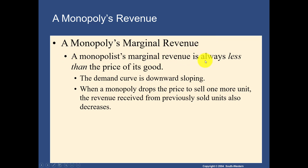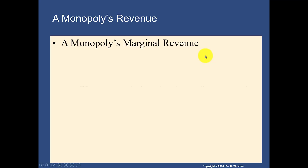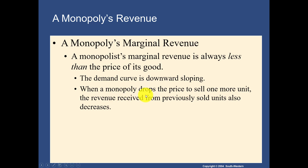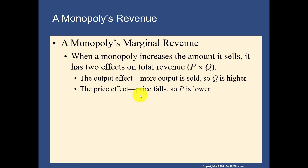The monopoly's marginal revenue is always less than the price of the good — you can see this clearly in the data. The demand curve is downward sloping: when a monopoly drops its price, the revenue received from previously sold units also decreases. When a monopoly increases the amount it sells, there are two effects on total revenue: the output effect, where more output is sold so quantity is higher, and the price effect, where price falls so P is lower.